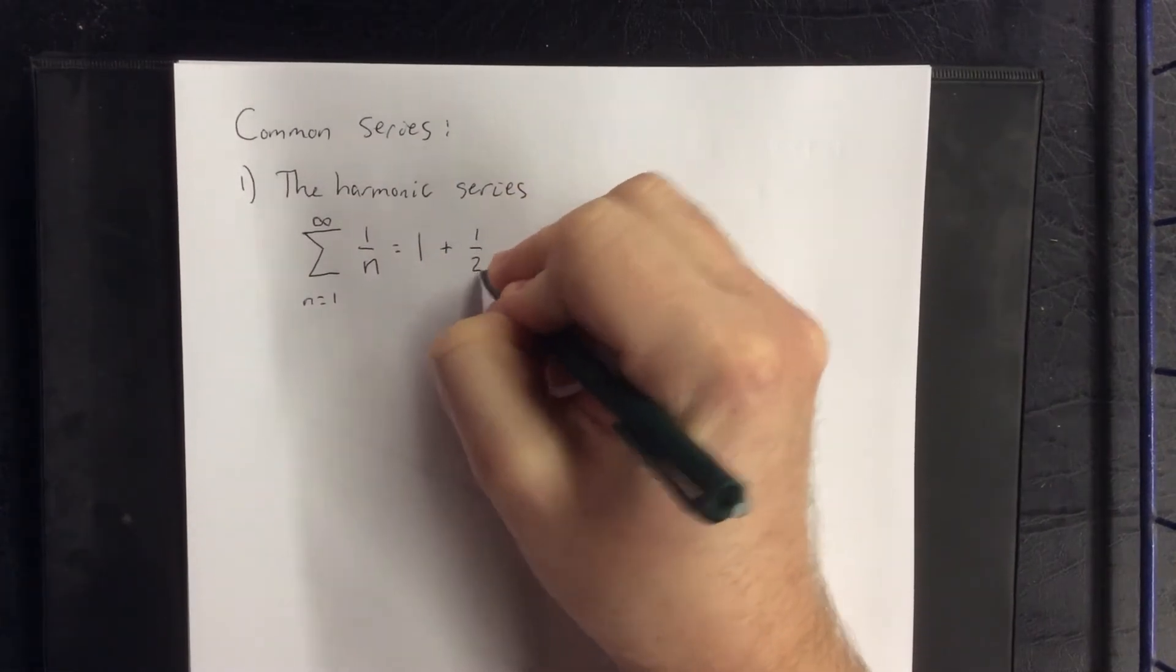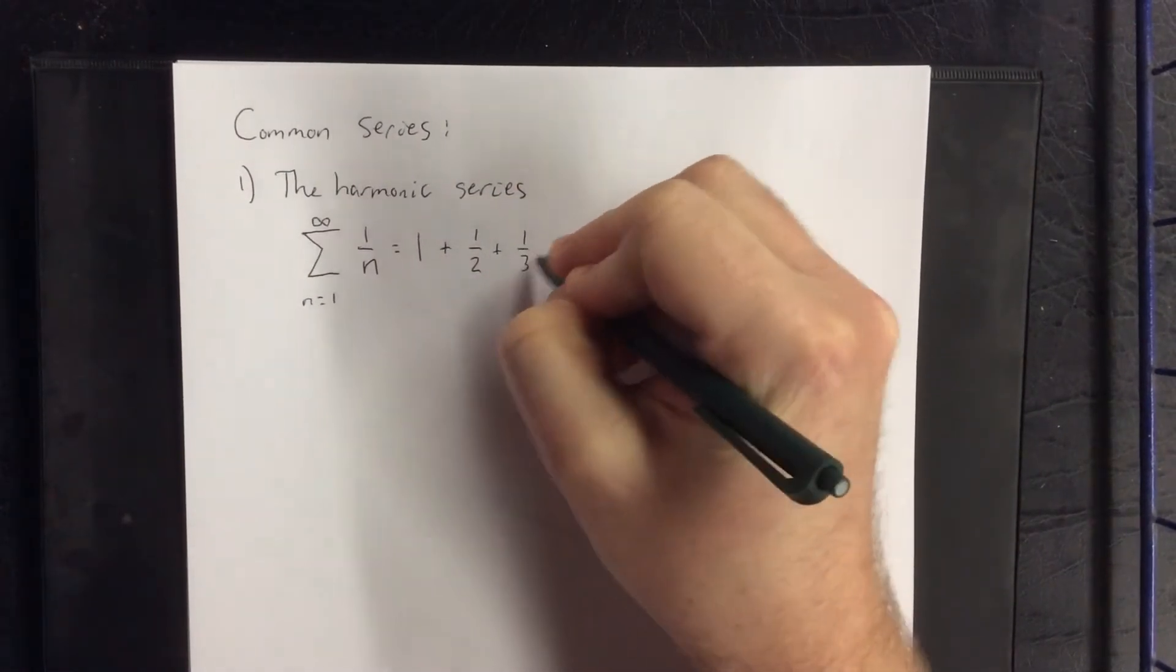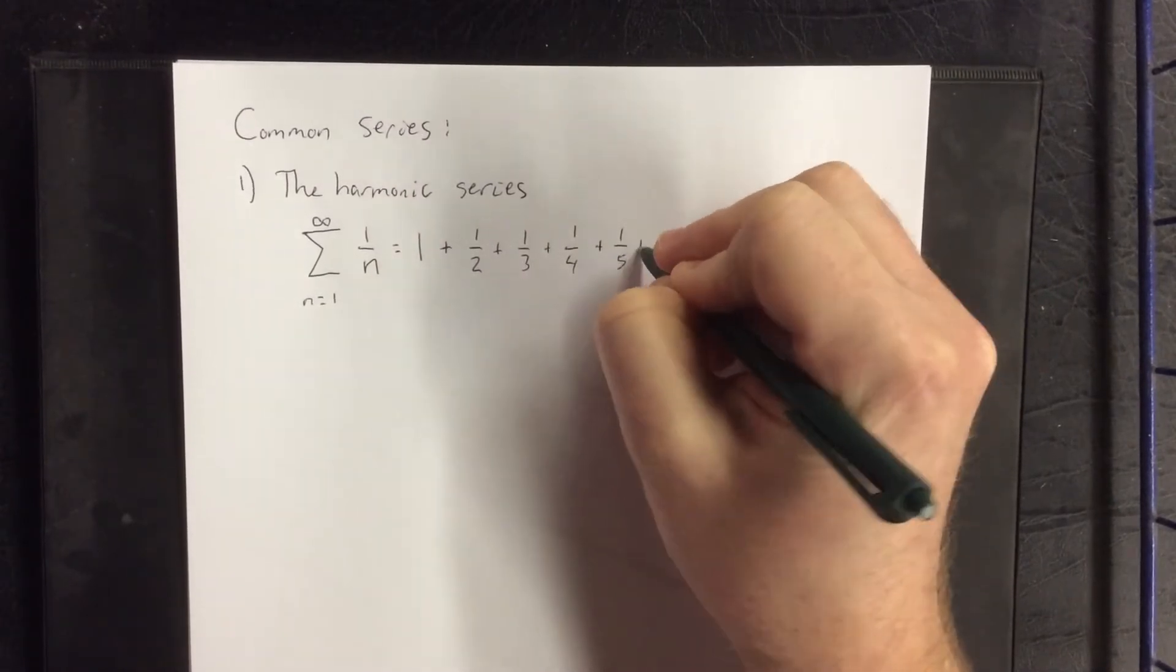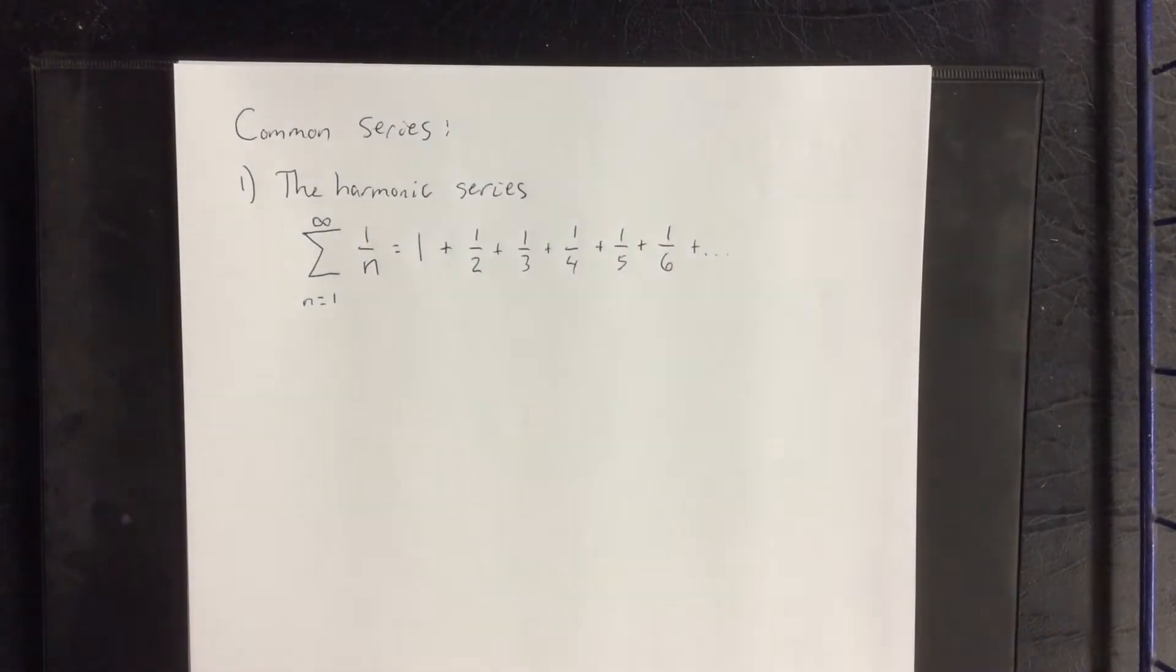The harmonic series looks like the following: 1 plus 1 half plus 1 third plus 1 fourth and so forth, and so on with denominators going up one at a time.